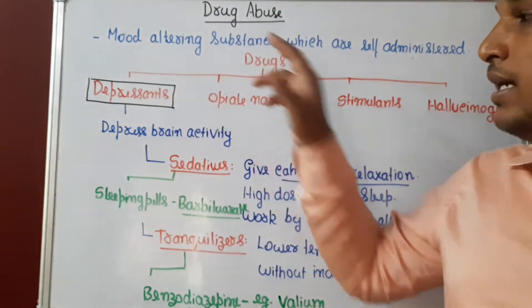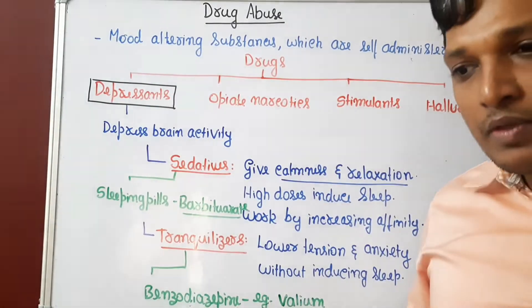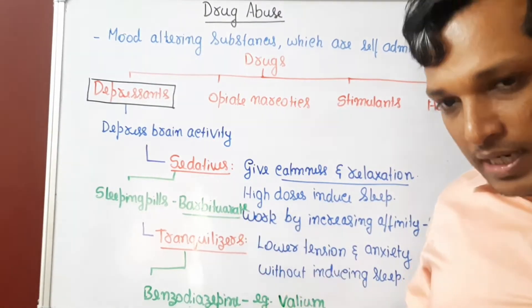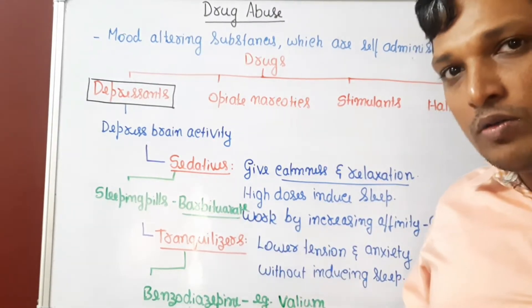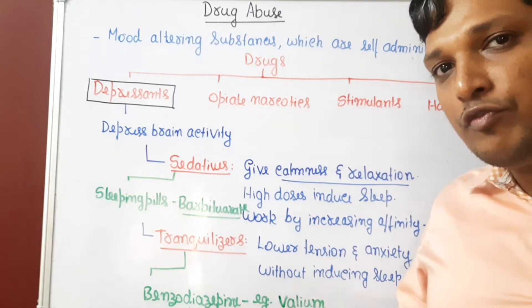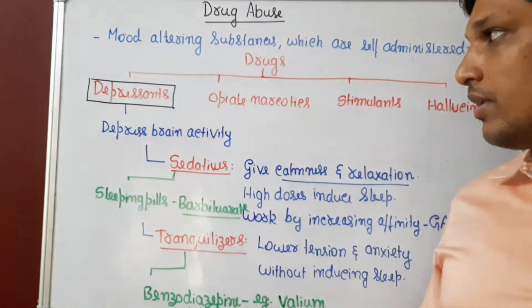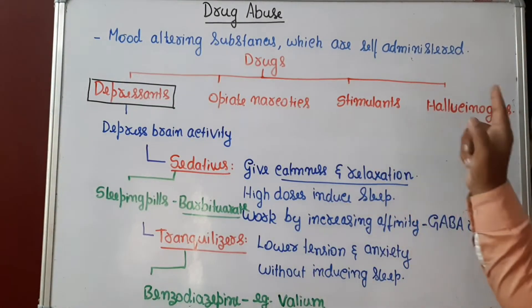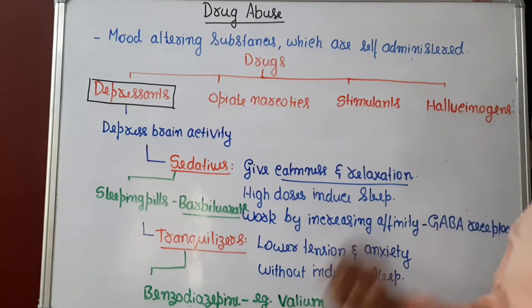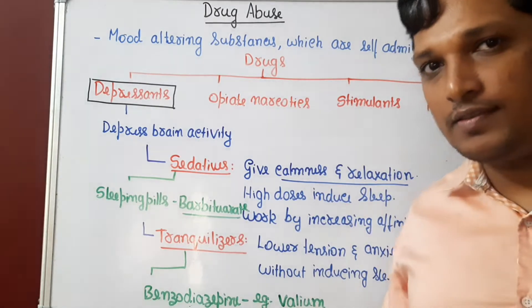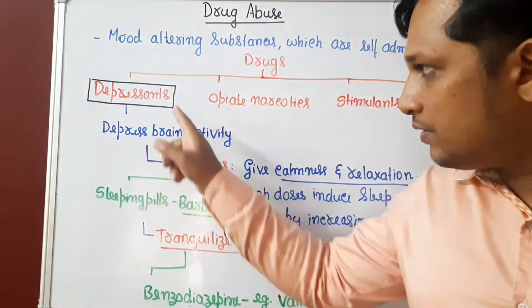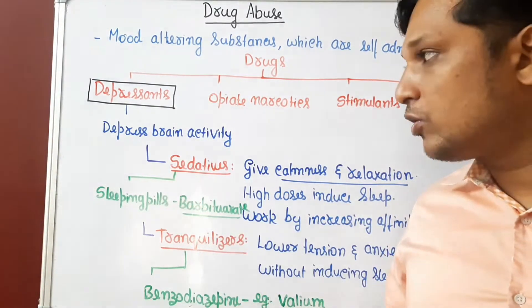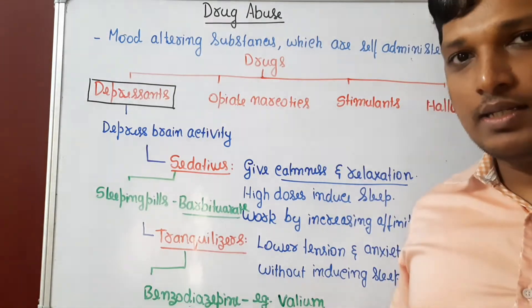The drugs that are abused belong to four types: depressants, opiate narcotics, stimulants, and hallucinogens. In this video, let us learn about depressants — the first group of drugs.